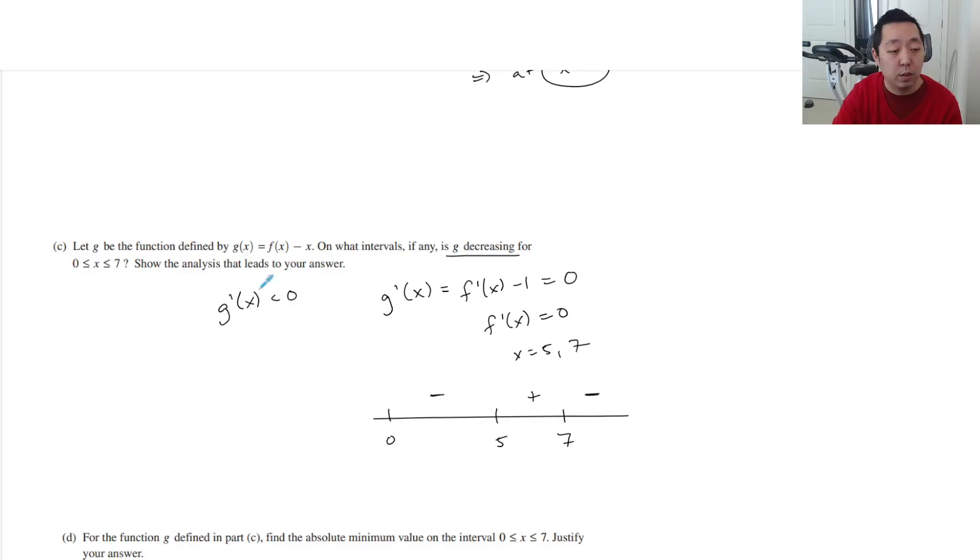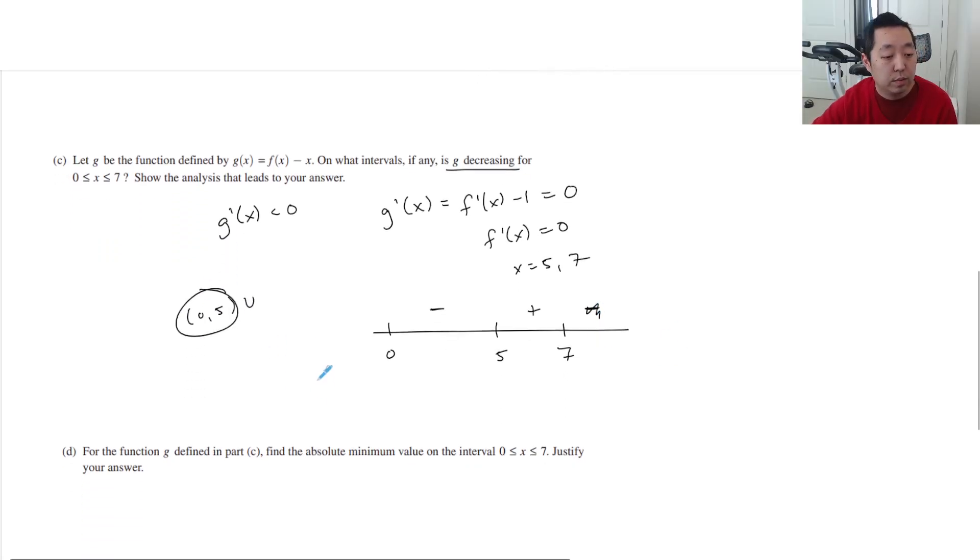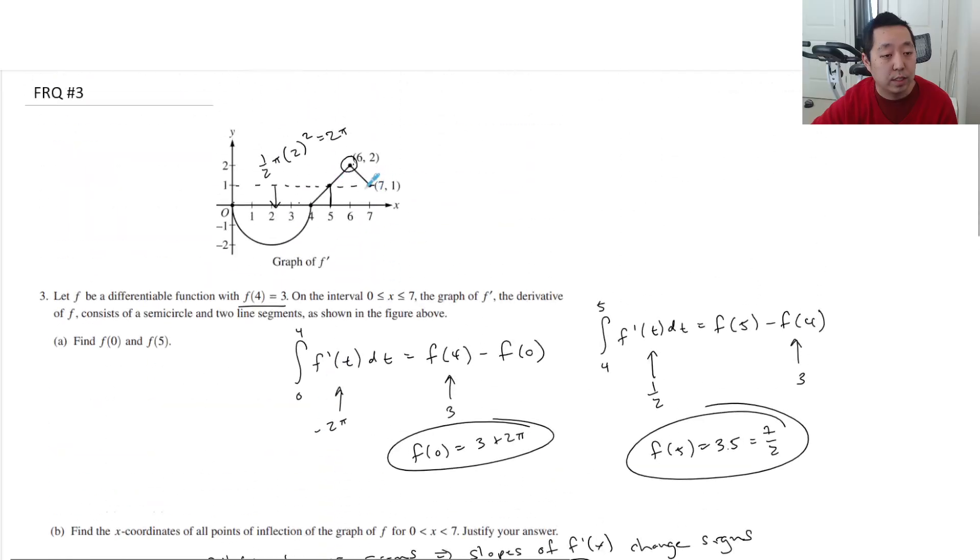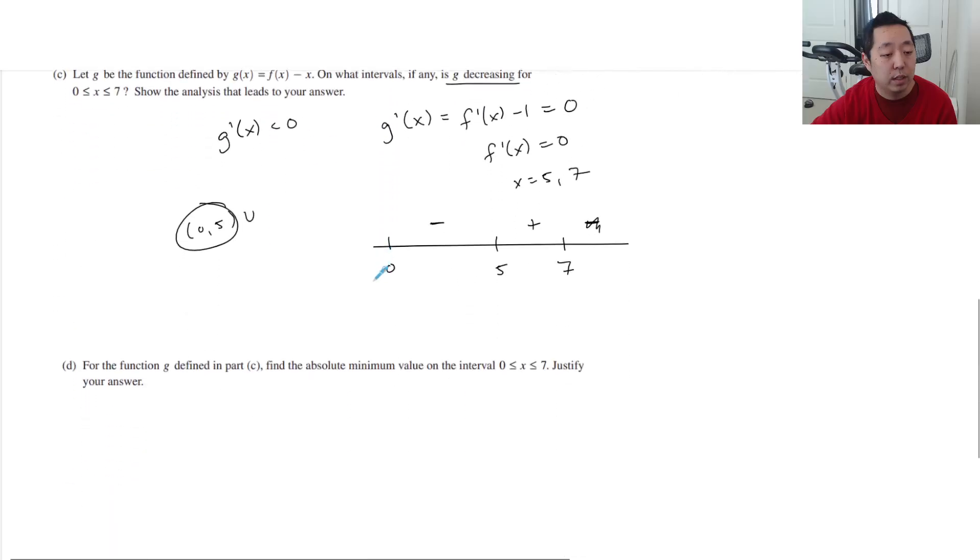So where is it decreasing? It's decreasing when is this less than 0? It's between 0 and 5. And actually, there's nothing beyond 7. So just between 0 and 5. Nothing's beyond 7 because it actually stops there at 7. So just between 0 and 5, that's where that would be negative.